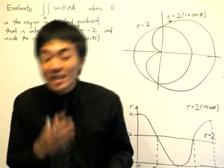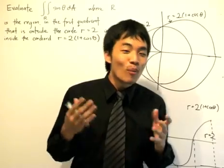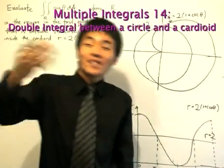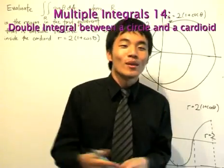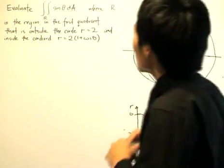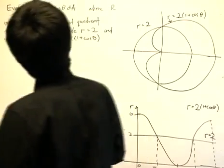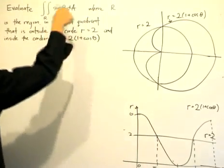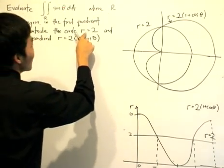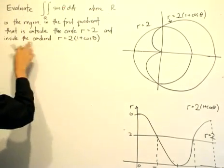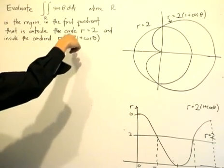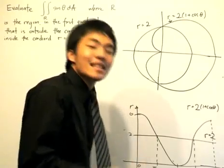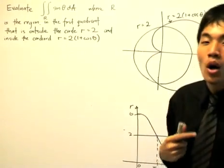Now that you're familiar with some of the procedures in evaluating double integrals in polar coordinates, let's look through a common example. We're going to find the double integral of sin θ. Our problem is that we want to evaluate sin θ over the region R, where R is the region in the first quadrant that is outside the circle r=2, and inside the cardioid r=2(1+cos θ).